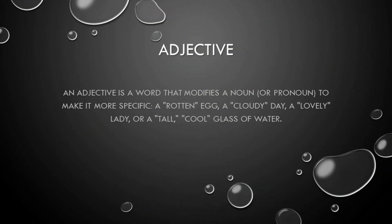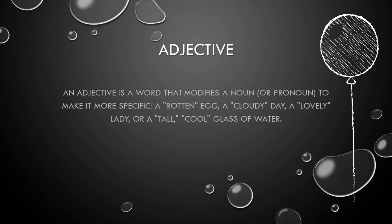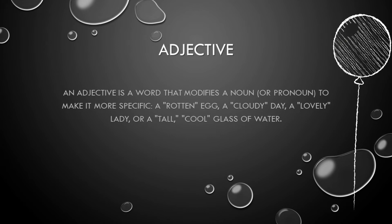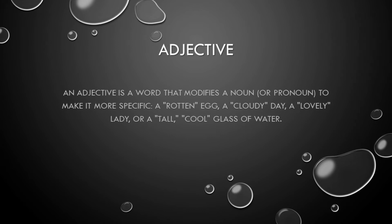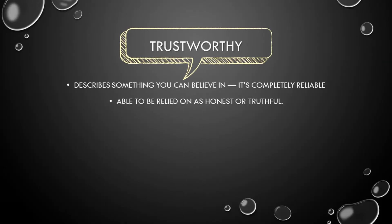The first thing we need to know is what is an adjective in English. An adjective is a word that modifies a noun or a pronoun, to make it more specific. For example: a rotten egg, a cloudy day, a lovely lady, or a glass of water. Those are adjectives in English. The first adjective we are going to analyze is trustworthy.